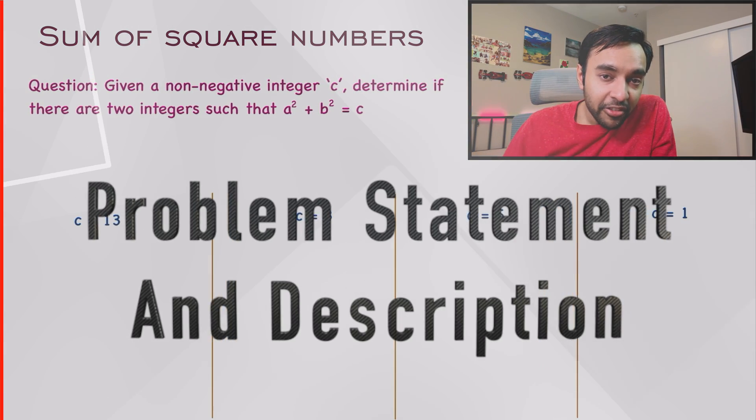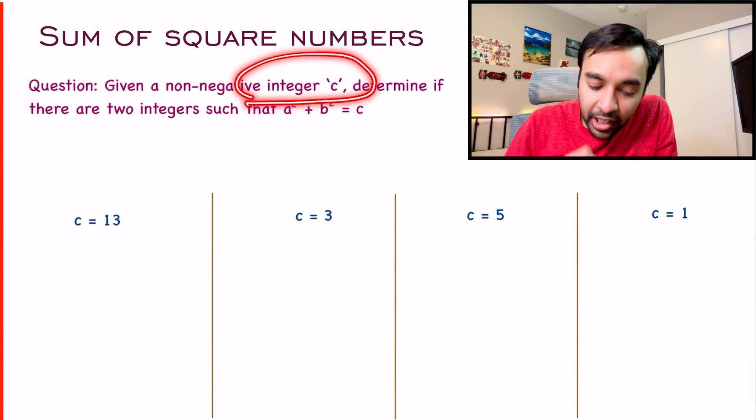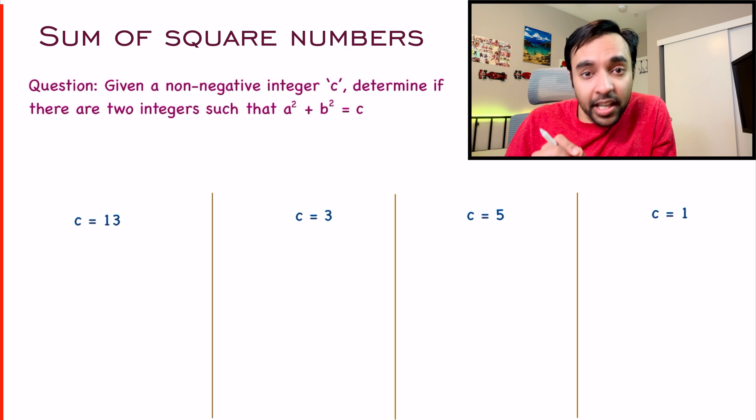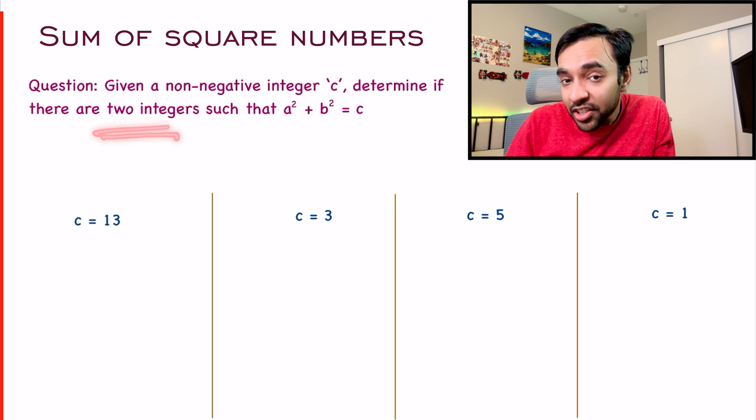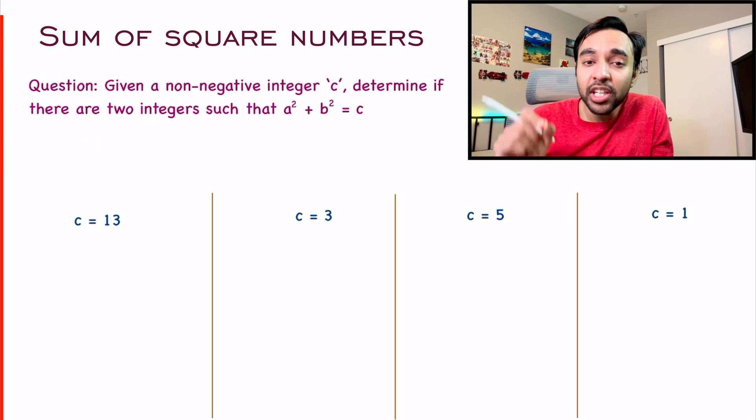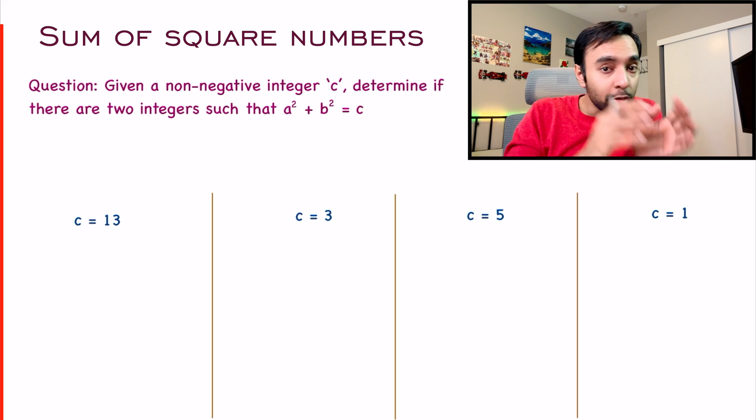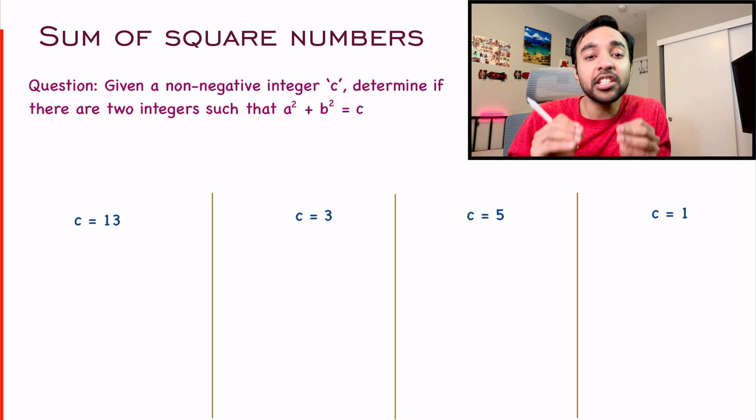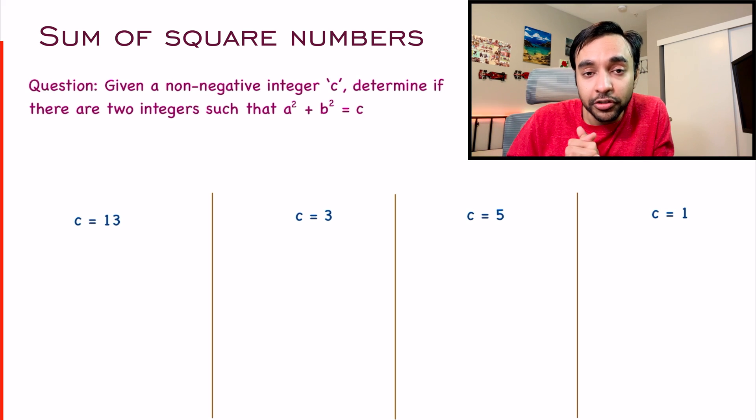The problem itself is very straightforward. You are given a non-negative integer c and then you have to determine if there are any two integers such that a² + b² equals c. You don't have to find those integers. You just need to tell me if such integers are present. If yes, return true, else return false.